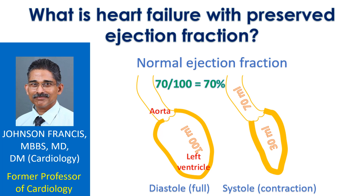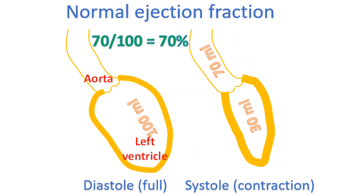Ejection fraction is the fraction of the blood ejected out from the filled heart. The lower chambers of the heart fill when they relax after a contraction. As an example, if the left ventricle — the lower left chamber — has 100 ml of blood after filling and 70 ml is ejected out during the next contraction, the ejection fraction is 70%.